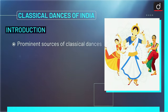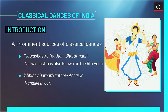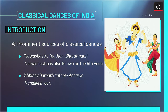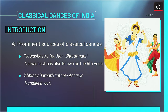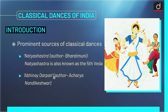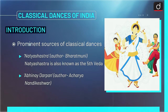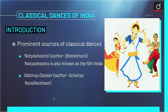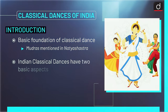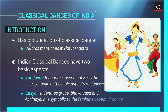The prominent sources of classical dances are as follows. Natya Shastra — its author is Bharat Muni, and it is also known as the 5th Veda. Abhinay Darpan — its author is Acharya Nandikeshwar. The Nataraja idol of Shiva is the symbol of Classical Dance. The basic foundation of Classical Dance are the Mudras mentioned in Natya Shastra.